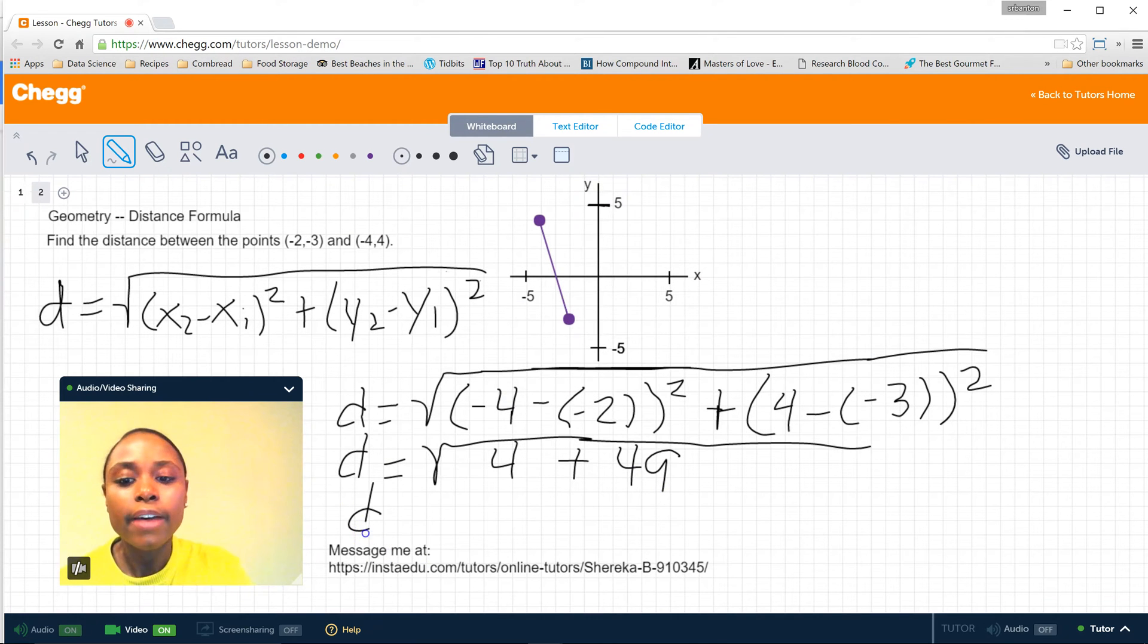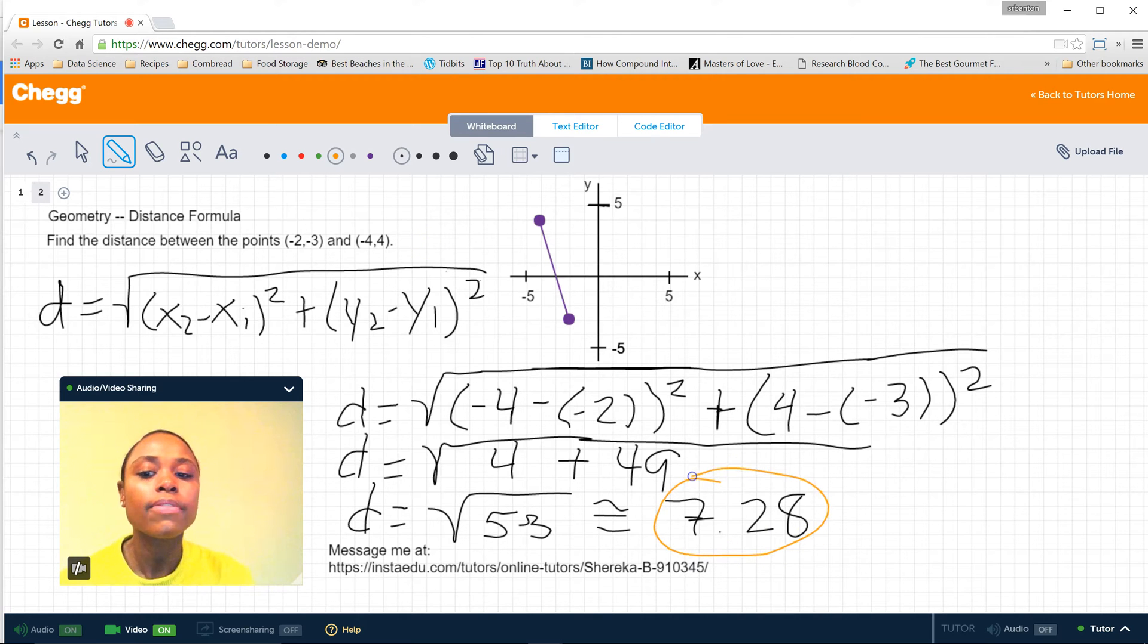So that means that we have d is equal to the square root of 53, which if we plug into our calculators is roughly equal to 7.28. So what this means is that the distance between these two particular points is 7.28, which is the final answer.